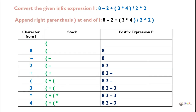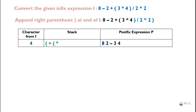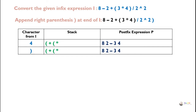Next is operand 4, which goes directly into the postfix expression. After 4, we get a right parenthesis. We pop all operators from the stack one by one until we get a left parenthesis. The multiplication operator (star) is popped and added to the postfix expression. Then the left parenthesis is popped and discarded.